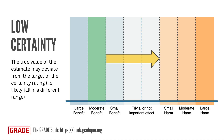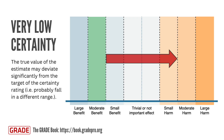Low certainty means that the true value of the estimate may deviate from the target of the certainty rating. For example, if the evidence suggests a moderate benefit, low certainty means the true effect could in reality be a small benefit or no important effect. Finally, very low certainty means we have very little confidence about where the true effect lies in relation to the thresholds or range of interest. The true value of the estimate may deviate significantly, such that the true effect could be a small benefit, a trivial or unimportant effect, or even a harmful effect.